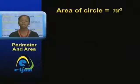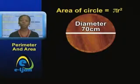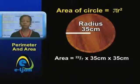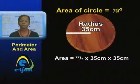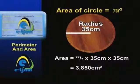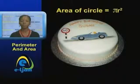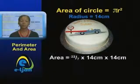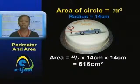So, if we wanted to know the area of the surface of a circular table whose diameter is 70 centimeters, we first find the radius, which is 35 centimeters, and then the area would be 22 over 7 times 35 times 35, which is 3,850 centimeters squared. What if we had a cake with a radius of 14 centimeters? The area would be 22 over 7 times 14 centimeters times 14 centimeters, which is 616 centimeters squared.